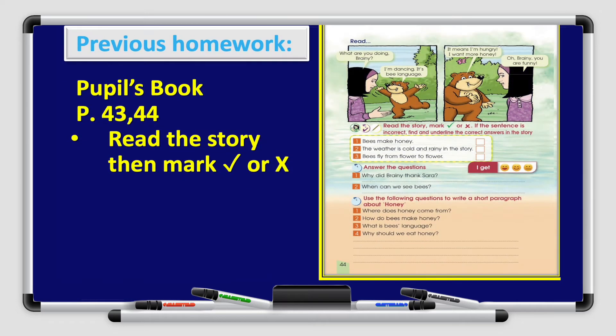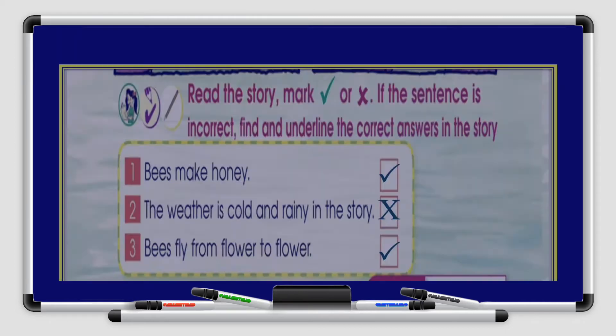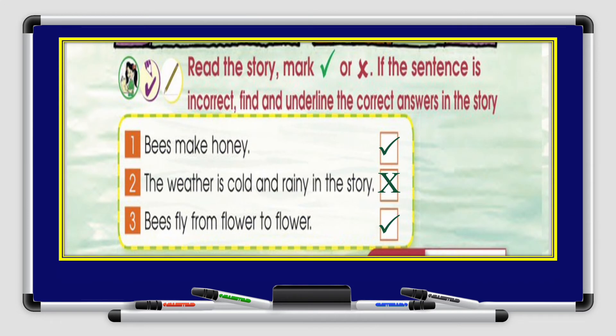Let's start with your previous homework. Let's go through your answers and check them together. You had a homework on your pupils book page 43 and 44. Read the story, then mark true or false. Now let's check your answers together.